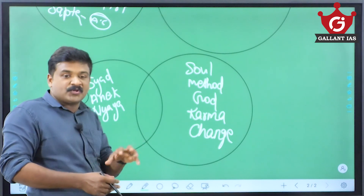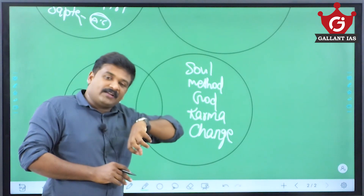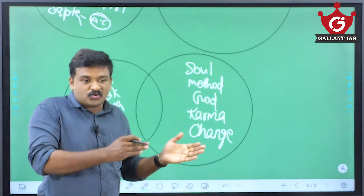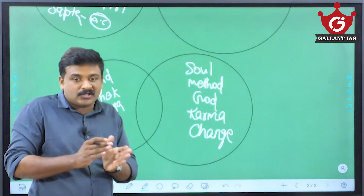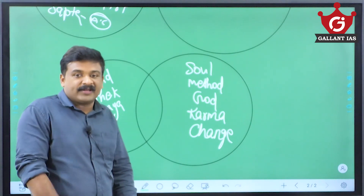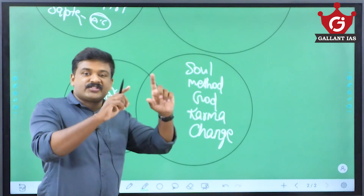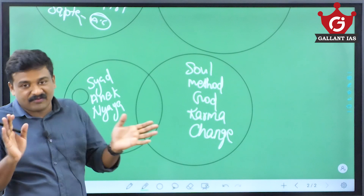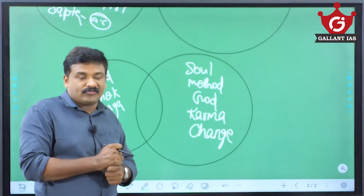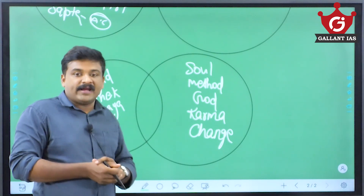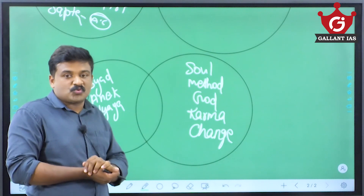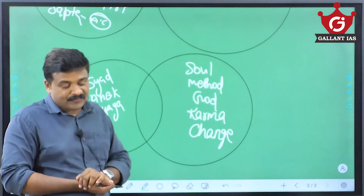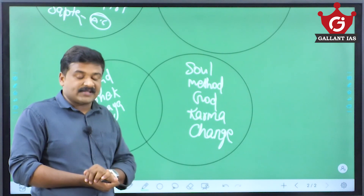For ancient India you also have to cover the Mauryan Empire, post-Mauryan kingdoms, Gupta period, post-Guptas, and the cultural life of ancient India. For medieval India, cover from the mid-8th century AD up to the decline of the Mughal Empire. Then begins modern India. For art and culture, you can either study it separately or alongside ancient, medieval, and modern history. This series will continue — feel free to leave your comments and feedback, and the entire team is there to support you in the upcoming civil service examination. All the best.